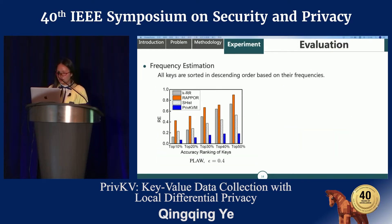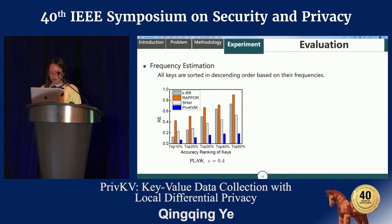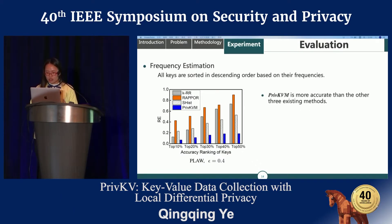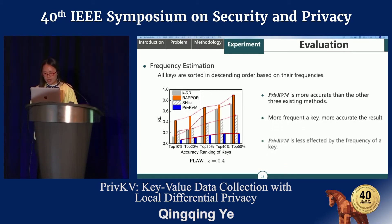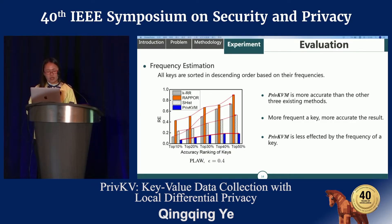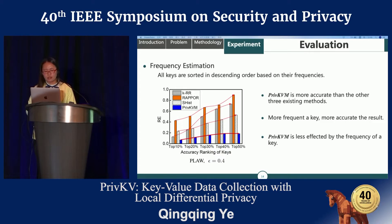For frequency estimation, we show the results of Private KVM comparing with three existing methods. We observe that our method is more accurate than the other three existing methods. For all methods, we observe that the more frequent a key, the more accurate the result. Overall, Private KVM is less affected by the frequency of a key.